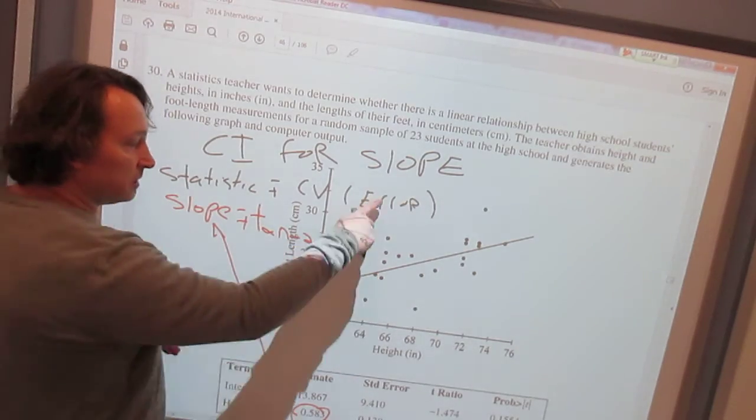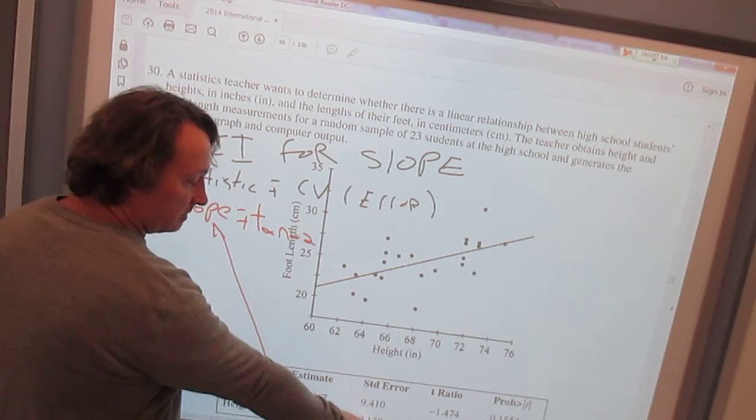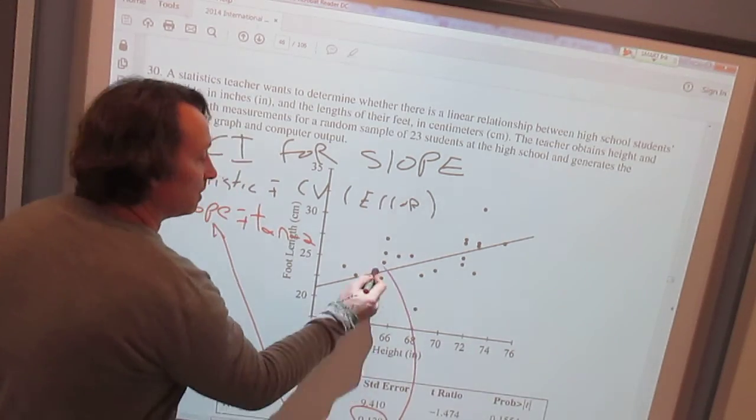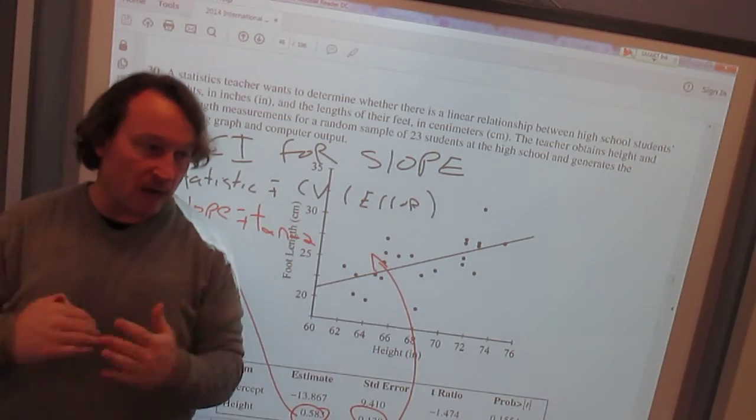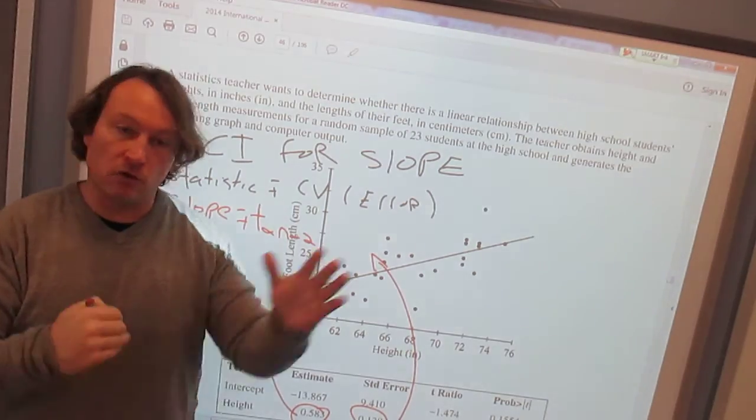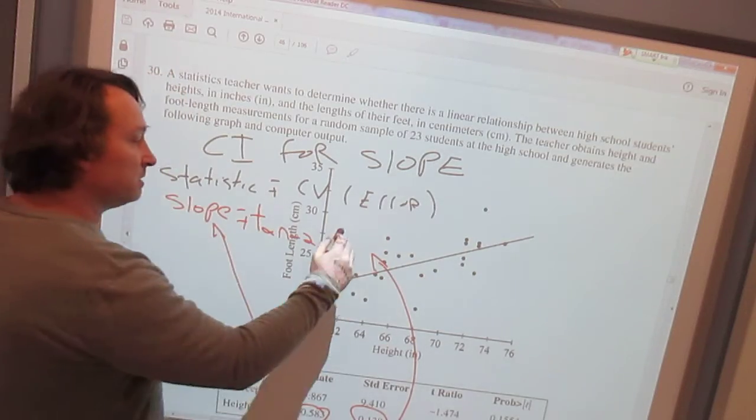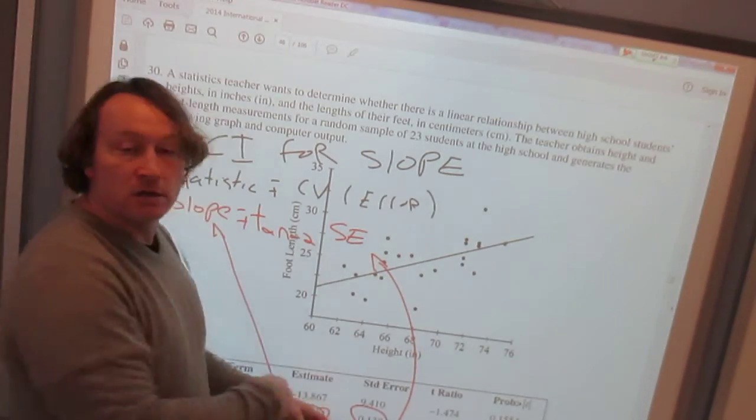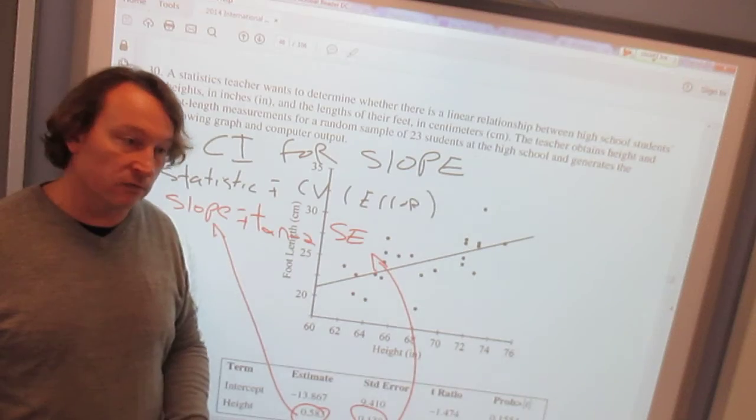The other difference is our standard error is already calculated for us, and it's already divided by the square root. So when you're looking up answers for this one, you're just going to take the standard error right from here. You're not going to have to divide by the square root.